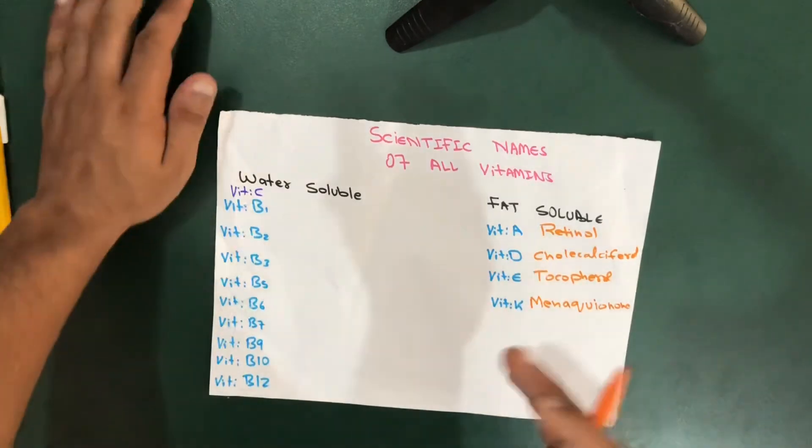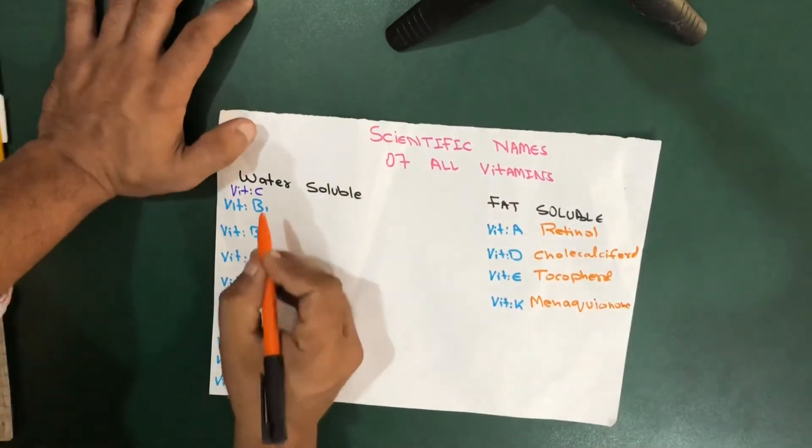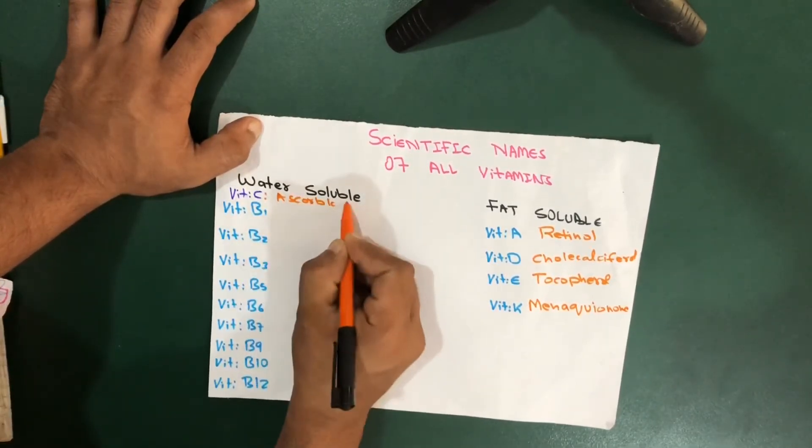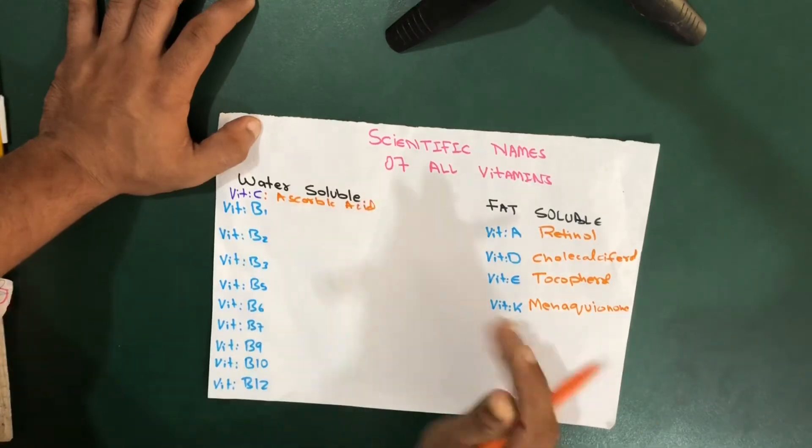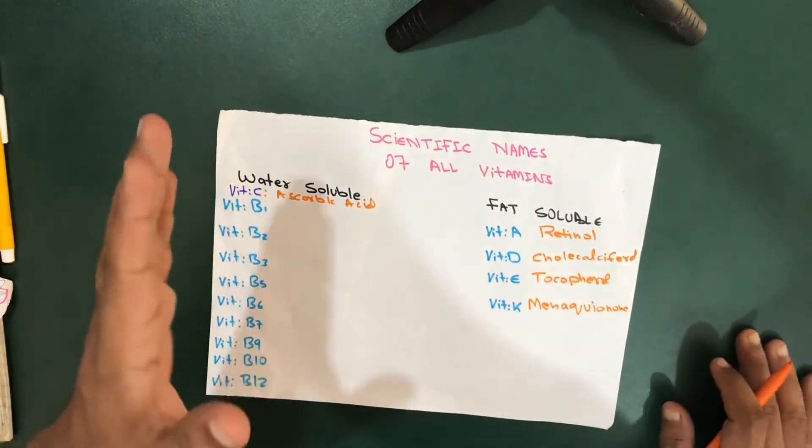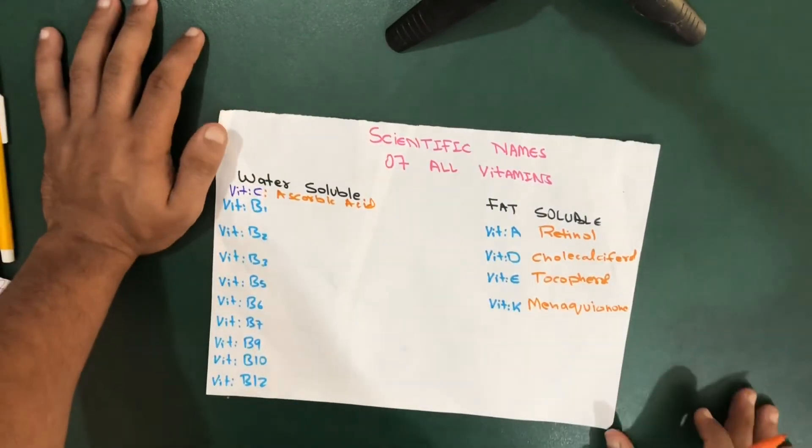Now let's move towards the water soluble vitamins. In water soluble vitamins we have vitamin C, which is also called ascorbic acid. We have the B complex vitamins. In the vitamin B complex we have different vitamins, starting with vitamin B1, which is thiamine.